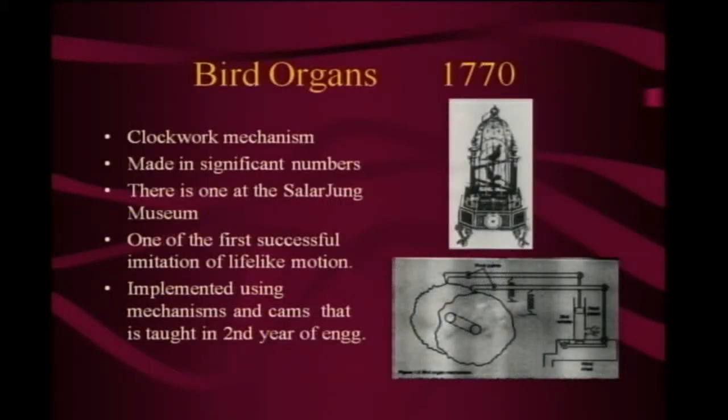This is not recent history. We start at around about 1770, where clockwork mechanisms were made. The picture on the top shows a bird that would chirp, flap wings, and dance around. These kinds of clockwork mechanisms were made in very large numbers. Specifically, if you have been to Hyderabad and seen the Salarjung Museum, you would have seen a drummer which, at 12 o'clock, actually marches out of a room, beats the drum 12 times, and goes back in.